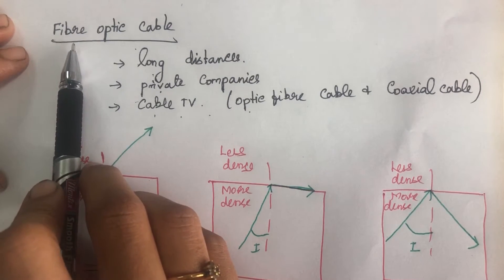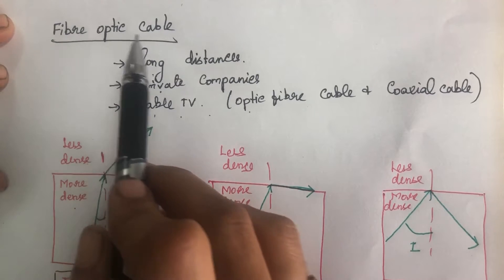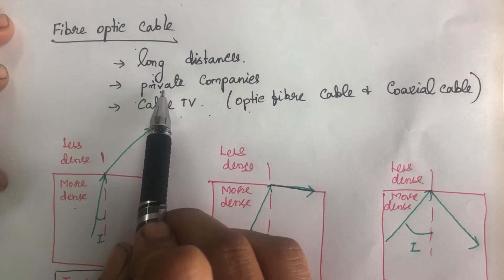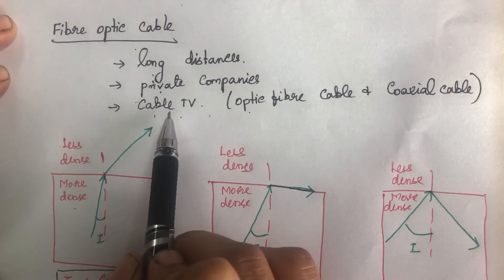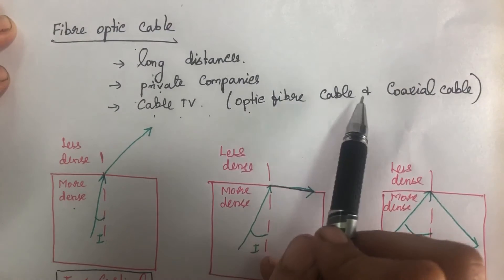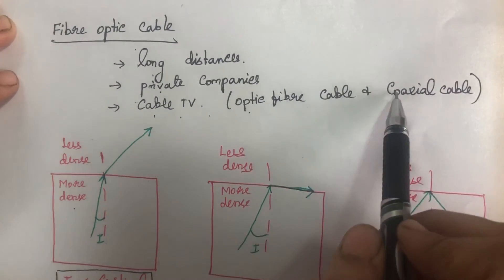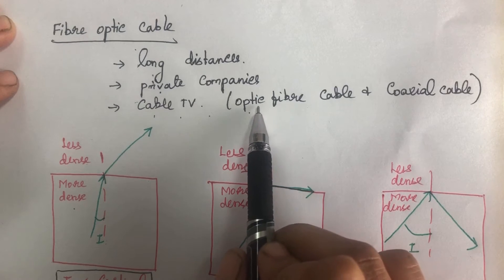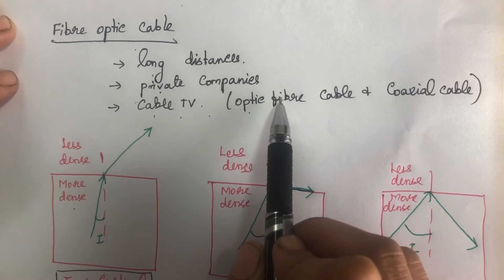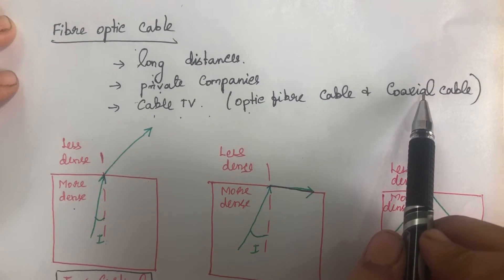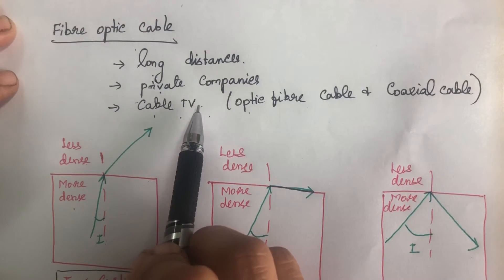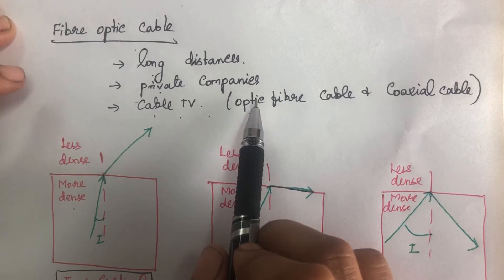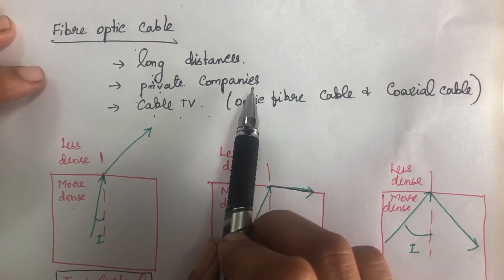Now we will see the last cable in guided media: fiber optic cable. Fiber optic cable is used for communicating over longer distances and in private companies where high-speed communication is required. It is also used in cable TV communication, where a combination of optical fiber and coaxial cable forms a hybrid network — optical fibers act as the backbone and coaxial cable connects to user premises — making it cost-effective with high bandwidth.